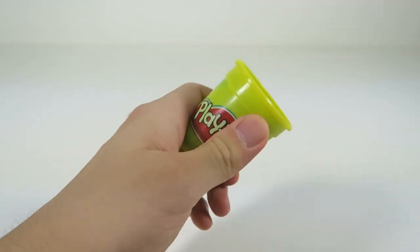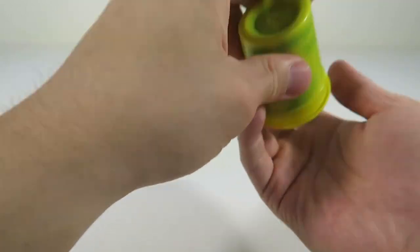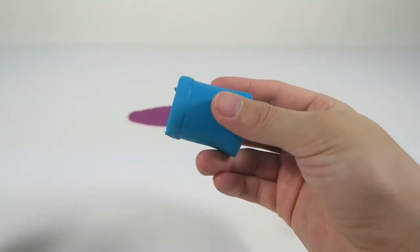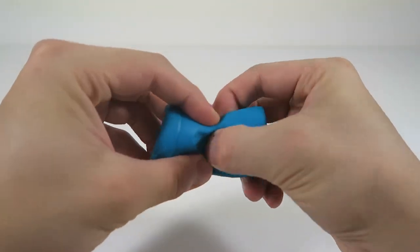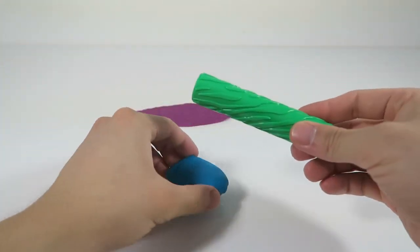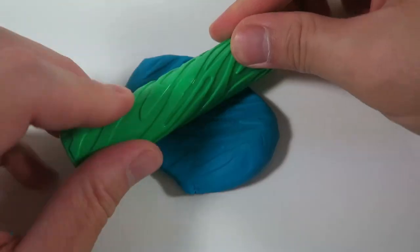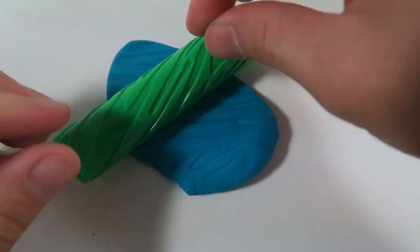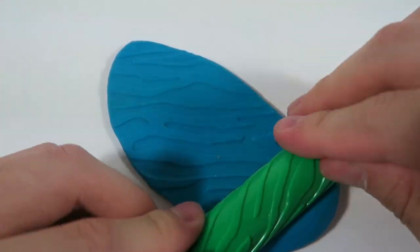Next, I'm going to use the blue Play-Doh. This time I'm going to use the stripe roller. Look at these cool designs that these rollers make.